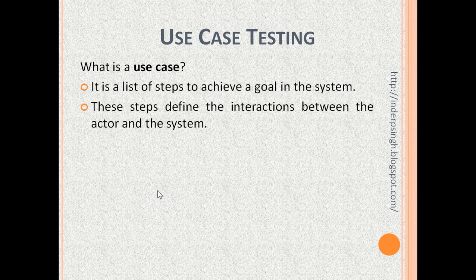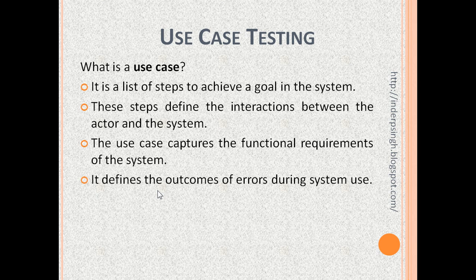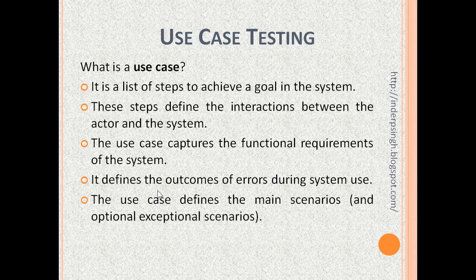What is an actor? The actor can be a user, the actor can be another system, or the actor can be elapsed time. The use case captures the functional requirements or features of the system. Another thing the use case does is it defines the outcomes of errors during system use — for example, it may throw an error message or it may end the use case with a failure. The use case has two parts: the main scenarios and the optional exceptional scenarios. A scenario is nothing but a workflow or a sequence of events.